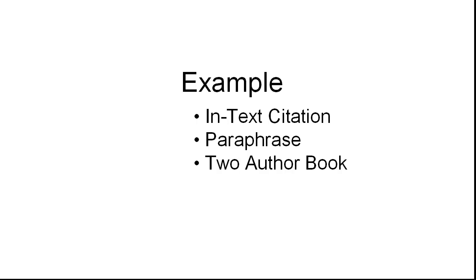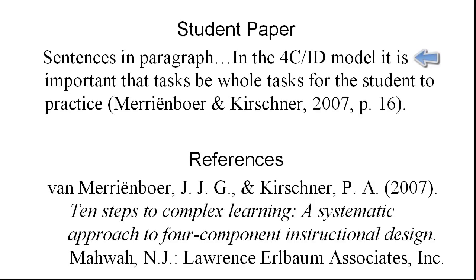In this lesson I'm going to illustrate how to cite in text a paraphrase from a two-author book. At the top we have our student paper and there is a paragraph — I'll show the last sentence which is a paraphrase. A paraphrase is something that you write in your own words. You don't copy it verbatim, but rather write it in your own words and then cite it just like you would a quotation.